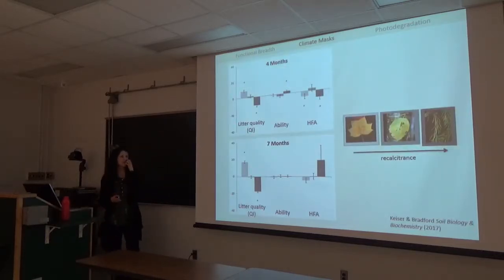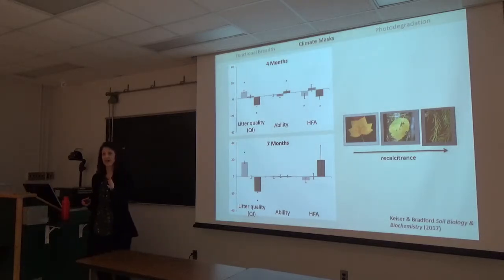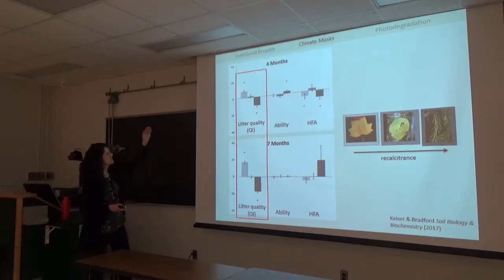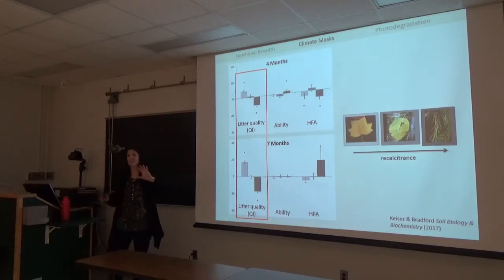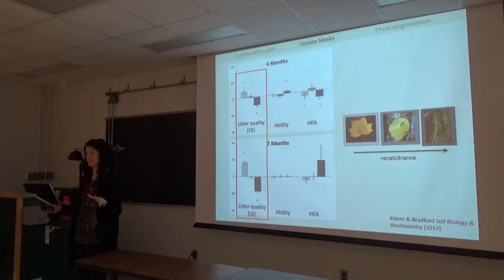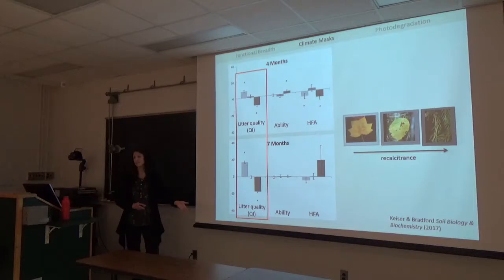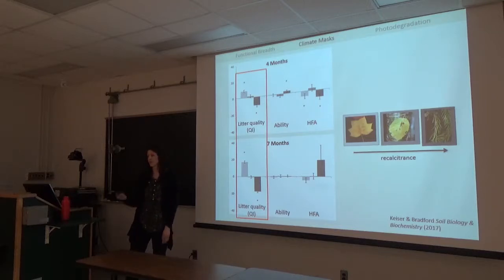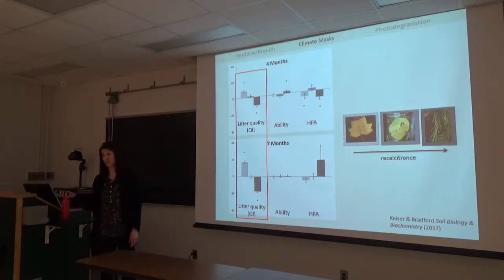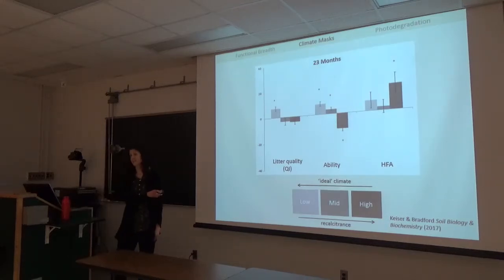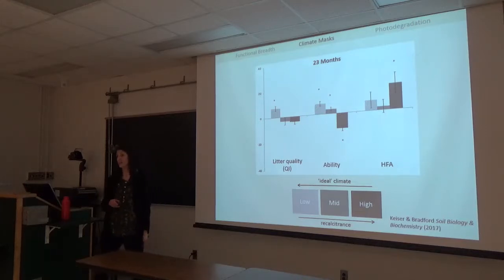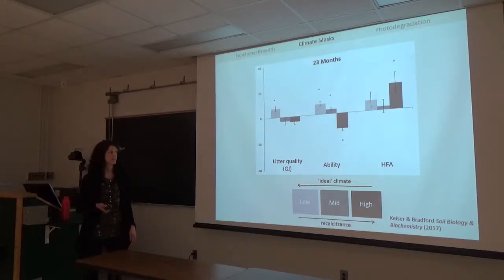At our first two collection points—four and seven months—variation in mass loss was driven by almost 70% attributable to litter chemical quality, matching what we'd expect from broad-scale decomposition experiments in the literature. Litter quality parameters matched expectations, with highest quality matching tulip poplar. At 23 months, climate became significant in the model, explaining about 30% of the variation in decomposition.